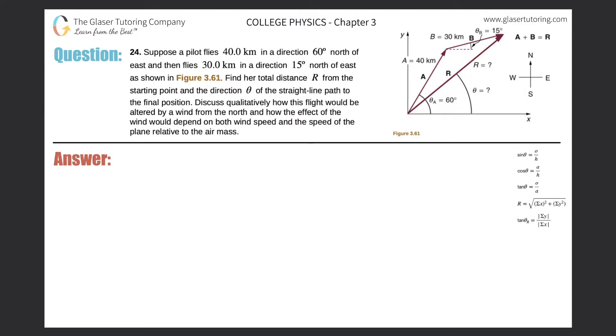Number 24. Suppose a pilot flies 40 kilometers in a direction 60 degrees north of east and then flies 30 kilometers in a direction 15 degrees north of east as shown in figure 3.61. Find her total distance r from the starting point and the direction theta in a straight line path.